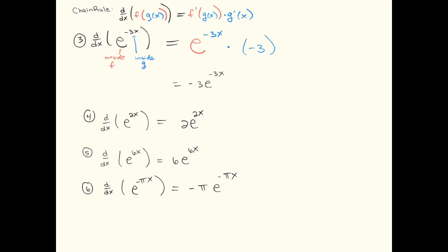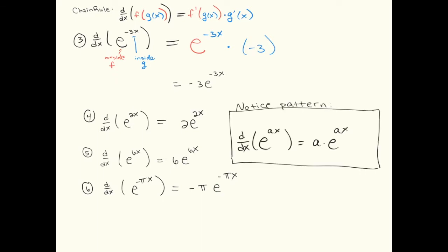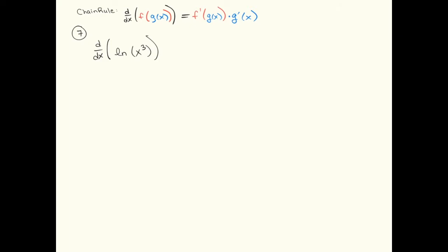You can do this over and over again for many functions. e to the 6x — the derivative is 6e to the 6x. e to the minus pi x — the derivative is minus pi e to the minus pi x. Do you see a pattern? Some people like to memorize this as a formula: the derivative of e to the ax is a times e to the ax. But it's just the chain rule — the e is the outside function and the ax is the inside function. The f prime part is the e, the g of x is the ax, and the g prime is the a.